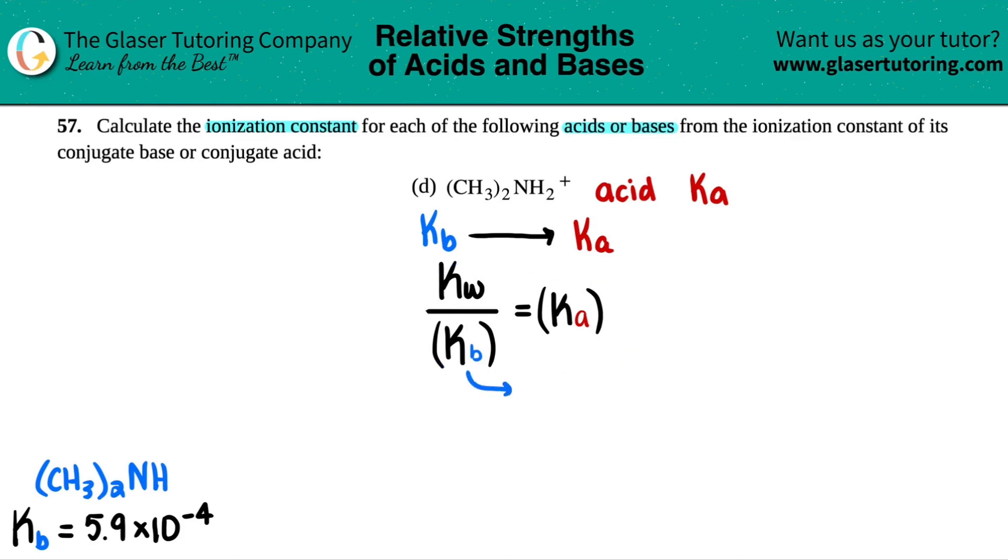So we have the Kb, that's 5.9 times 10 to the negative fourth. All of these values in the back of the textbook are always at room temp. So we should memorize the KW at room temperature. It's probably the only KW you have to memorize at room temp, and that's 1.0 times 10 to the negative 14th.